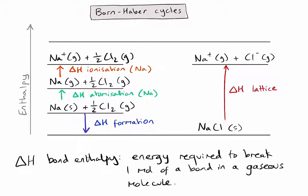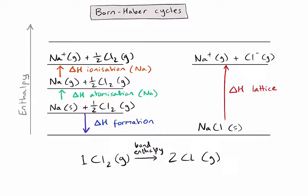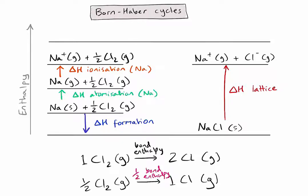In our diagram, we are only dealing with half a molecule of chlorine. A bond enthalpy value from the data booklet represents the change from one molecule into two atoms, but we are only changing from half a molecule into one atom. So in our example, we are going to need to halve the bond enthalpy value in order to represent the process we need to do. In this case, we've done nothing to the sodium ion at this stage, so I can leave that as is.